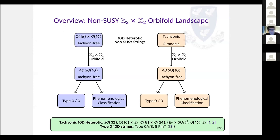We'll be looking at models descending from two different origins. First, we'll look at models descending from an O16 cross O16 tachyon-free heterotic string in 10 dimensions — these are more well explored in the literature. Then via a Z2 cross Z2 orbifold, we'll look at SO(10) models in four dimensions which are tachyon-free, and we'll call these S models. We'll explain the terminology in a couple of slides.